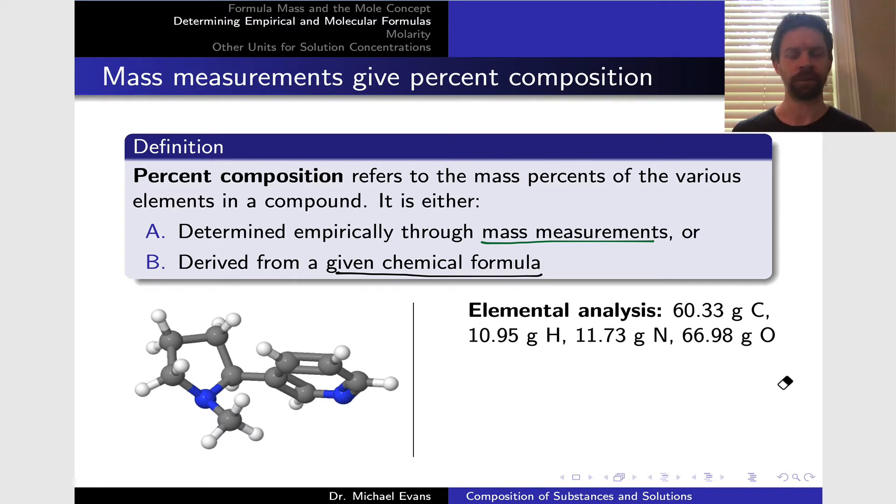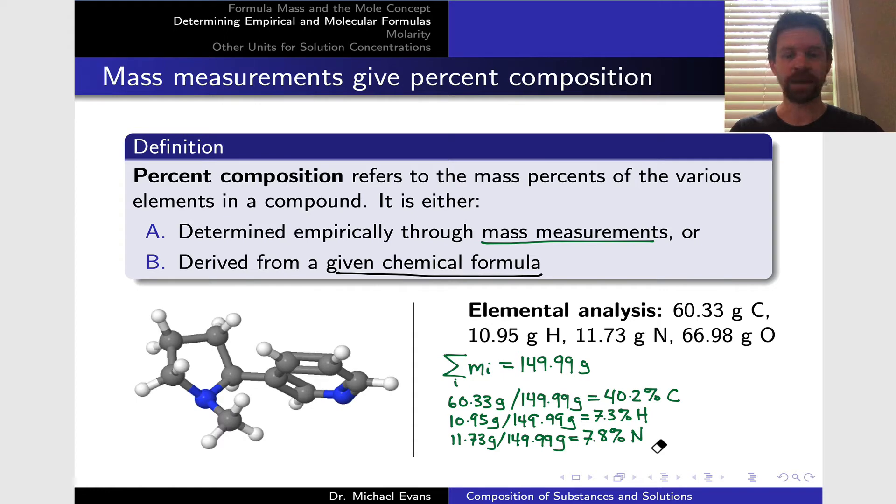To determine the percent mass composition of each element, we start by summing all those masses to figure out the total mass—here it turns out to be 149.99 grams. To determine the percentage that is carbon, we take the 60.33 grams of carbon and divide by the total. That gives us 40.2% carbon. We can do the same with hydrogen and obtain 7.3%, nitrogen 7.8%, and oxygen 44.7%.